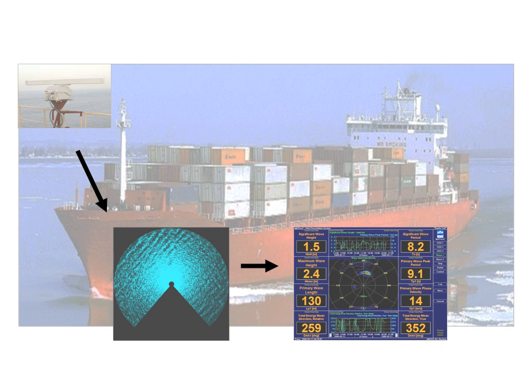The HF radar, CODAR SeaSonde and Helzel Werra, are well established as a powerful tool for sea current measurements up to a range of 300 km. It operates in the HF and low VHF frequencies band corresponding to a radar wavelength in the range of 10 to 300 meters.